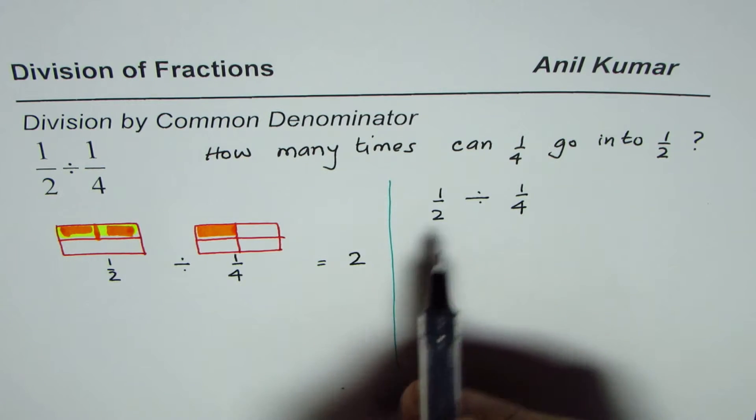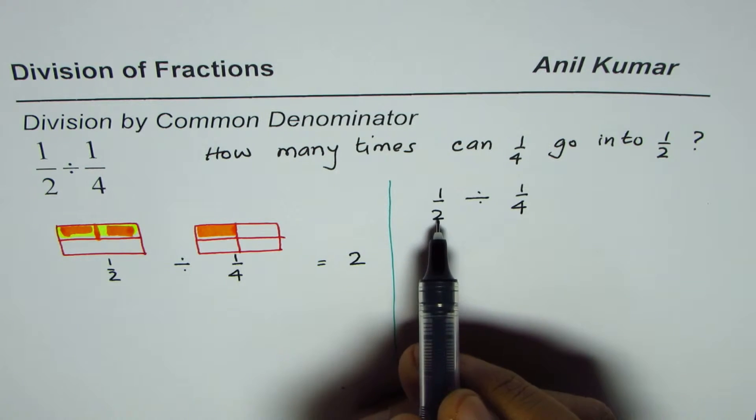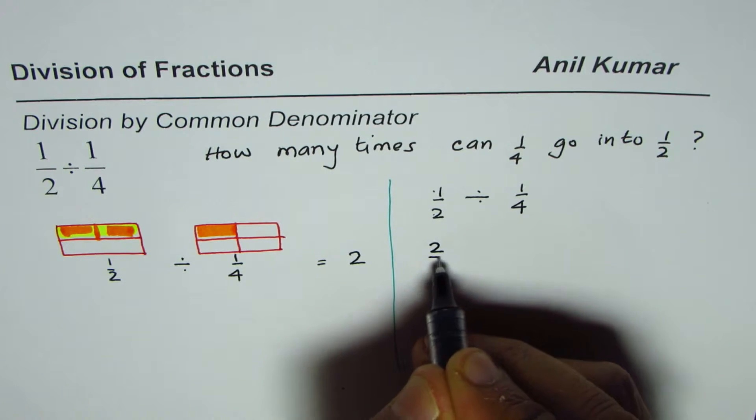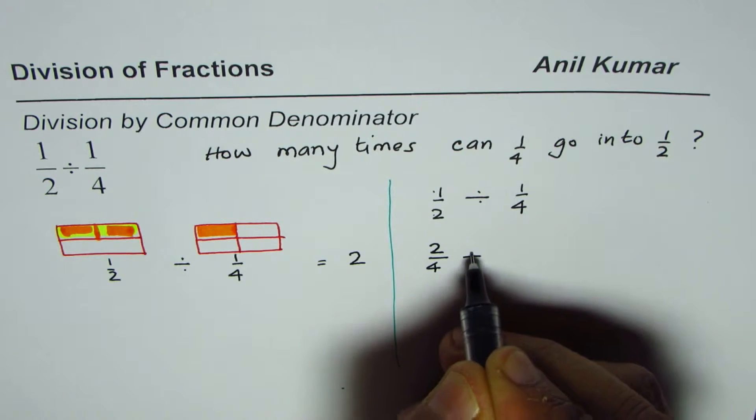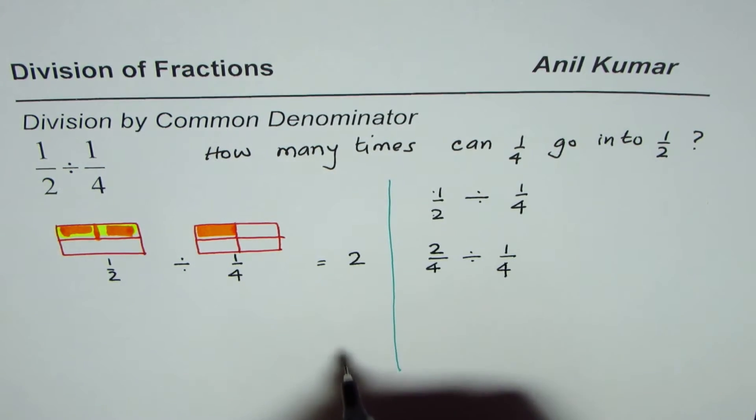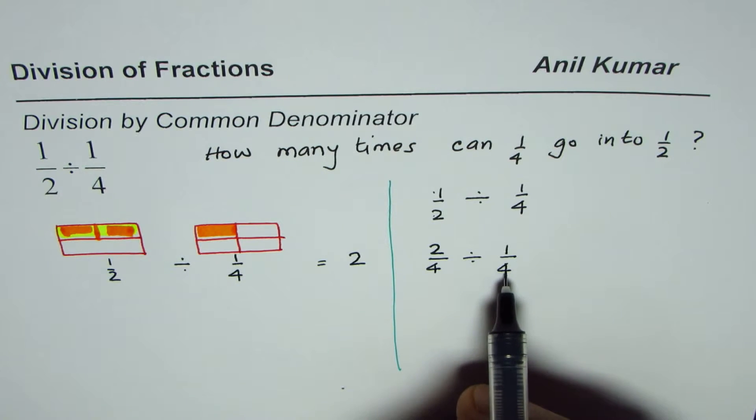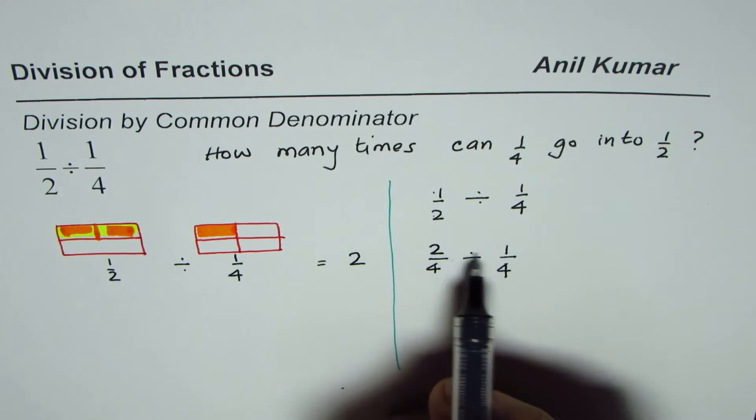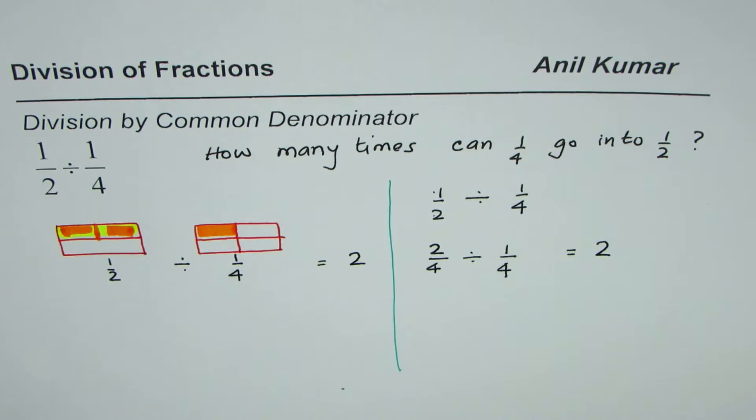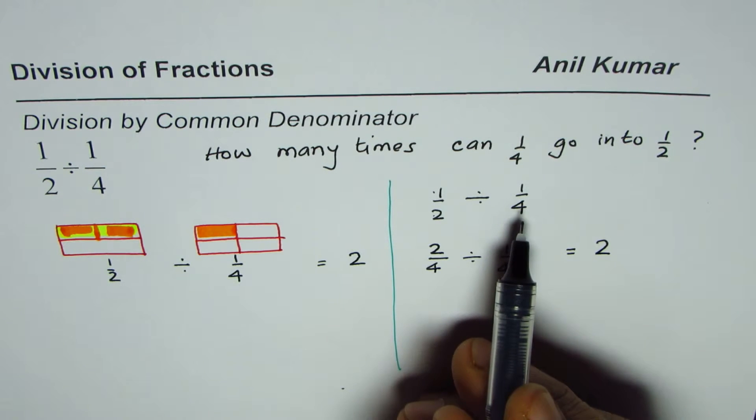So we get two over four divided by one over four. Since the denominators are the same, we can divide two by one and get the answer as two. We get the same answer, two, just by making common denominators.